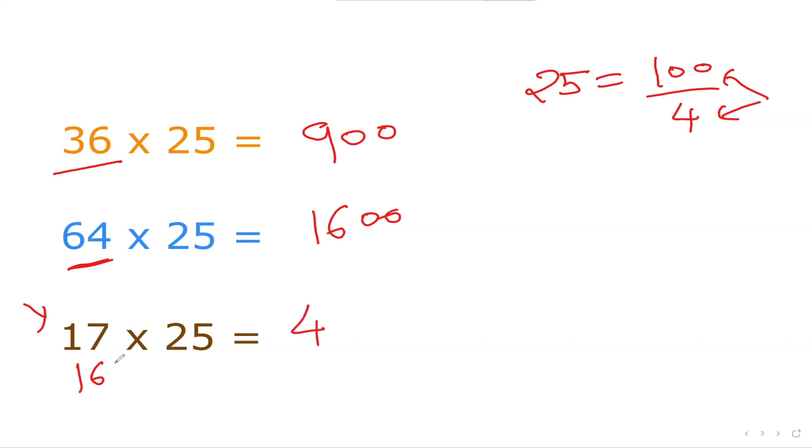Now 17 minus 16, what is the difference? 1. So there's a 1 difference. That 1 difference I'm going to multiply with this 25. So 1 times 25 is 25 which I can put down here. How cool is that?